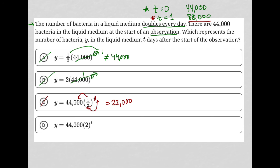And we can already see here for choice D that that's exactly what we'll get, right? If this is one, two times one is two, and two times 44,000 is in fact 88,000. So choice D is the correct answer here.